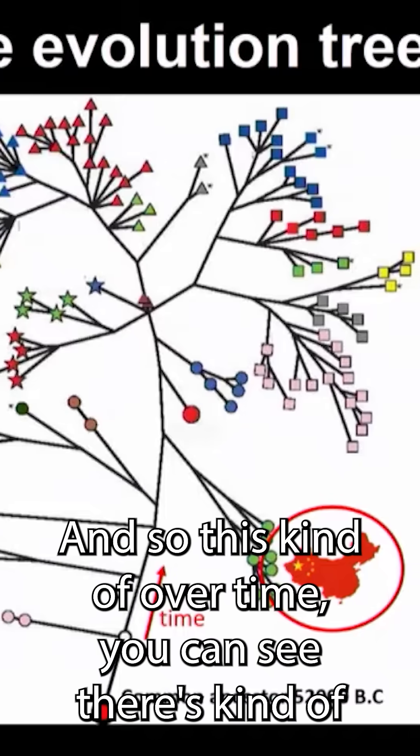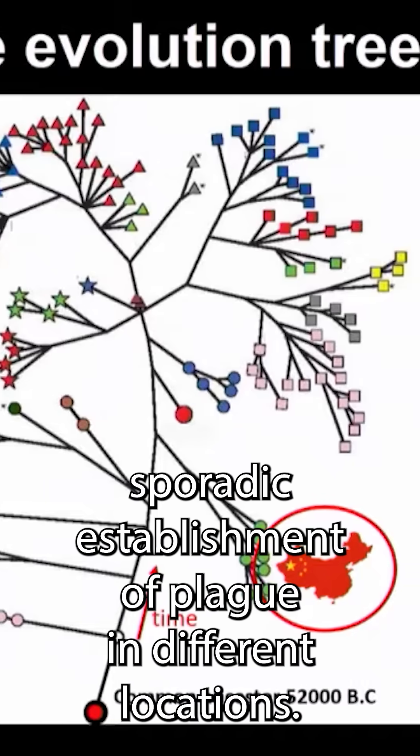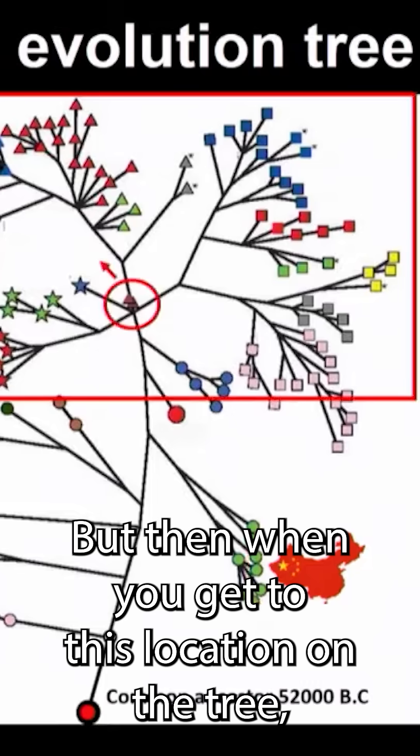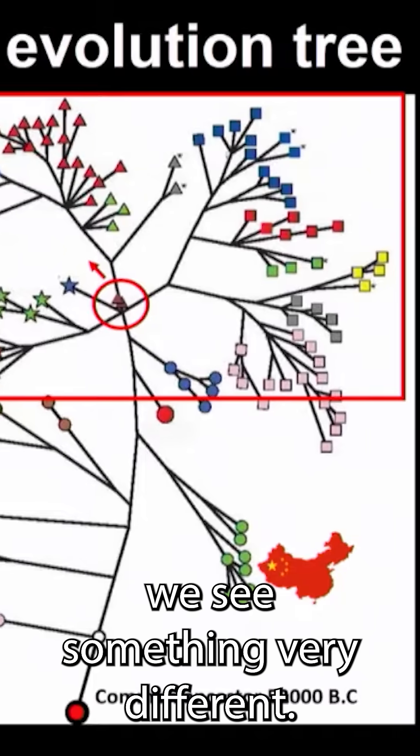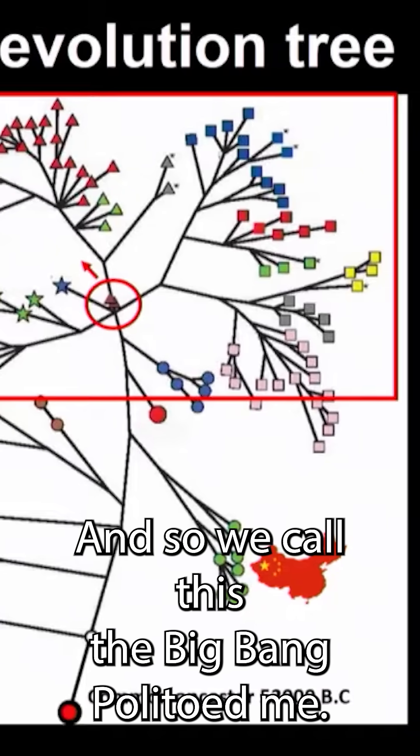Over time, you can see there's kind of sporadic establishment of plague in different locations. But then when you get to this location on the tree, we see something very different. And so we call this the big bang polytomy.